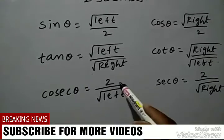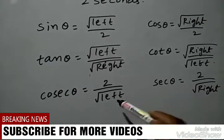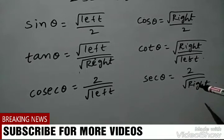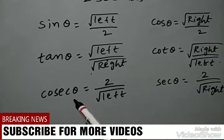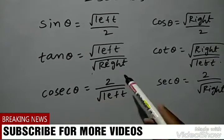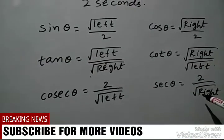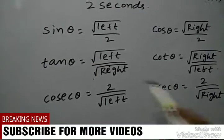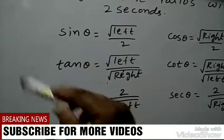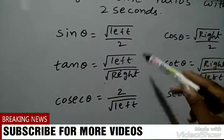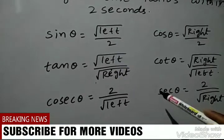Cosec theta is equal to 2 by root left, sec theta is equal to 2 by root right. Sec theta is exactly reciprocal to cos theta.